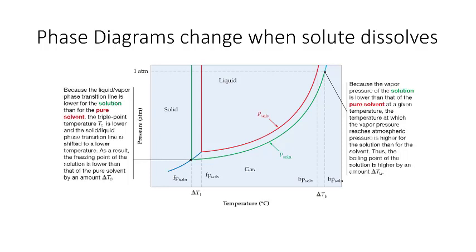Since colligative properties change the freezing and boiling points of a material, there should be an updated phase diagram associated with adding a solute to a solvent. The blue and red lines represent the phase diagram for the pure solvent. After dissolving a solute to make a solution, we elevate the boiling point and lower the freezing point. The green lines represent the changes in the phase diagram — the liquid-gas interface shifts down and to the right, and the liquid-solid interface shifts to the left.